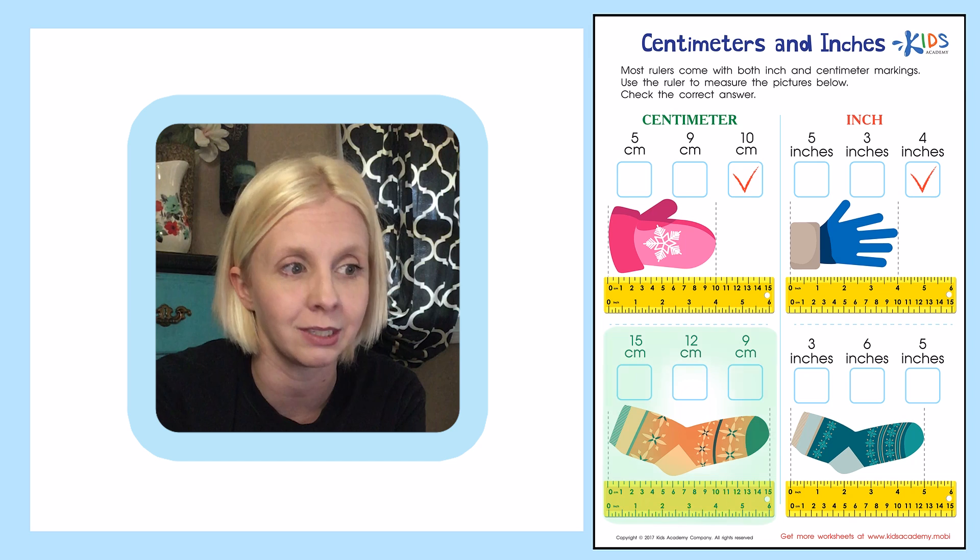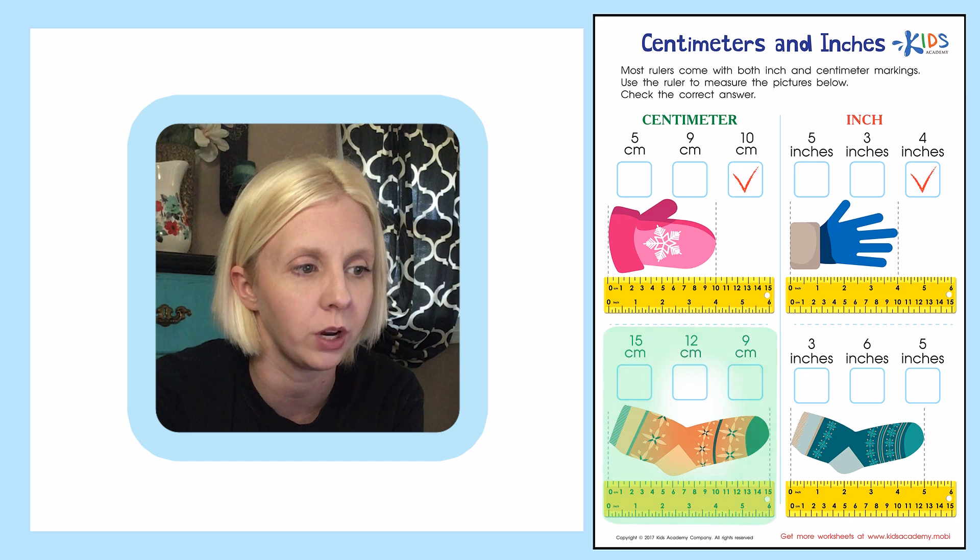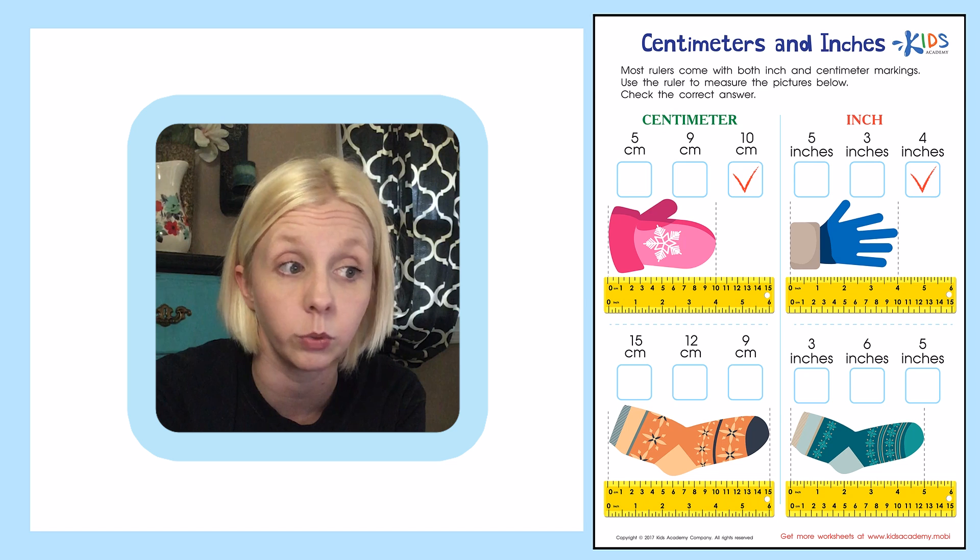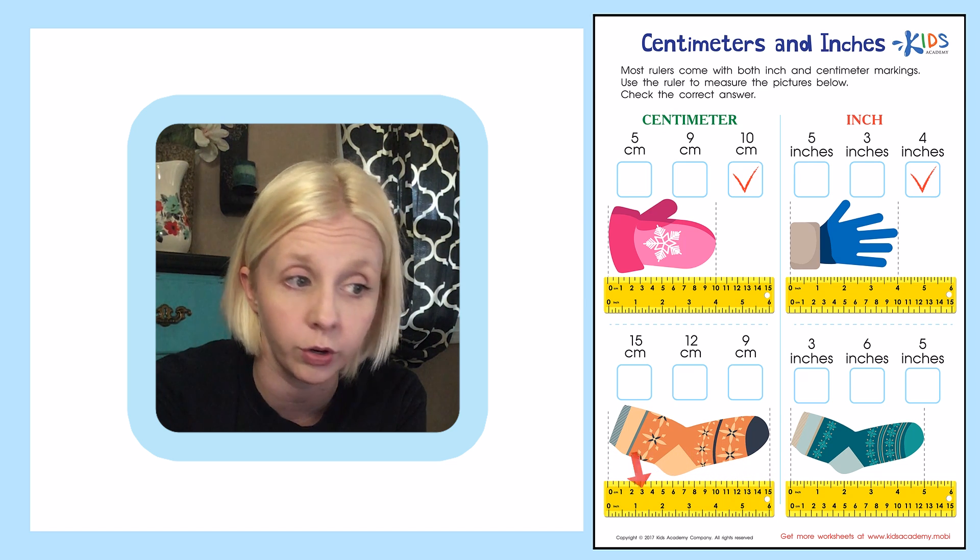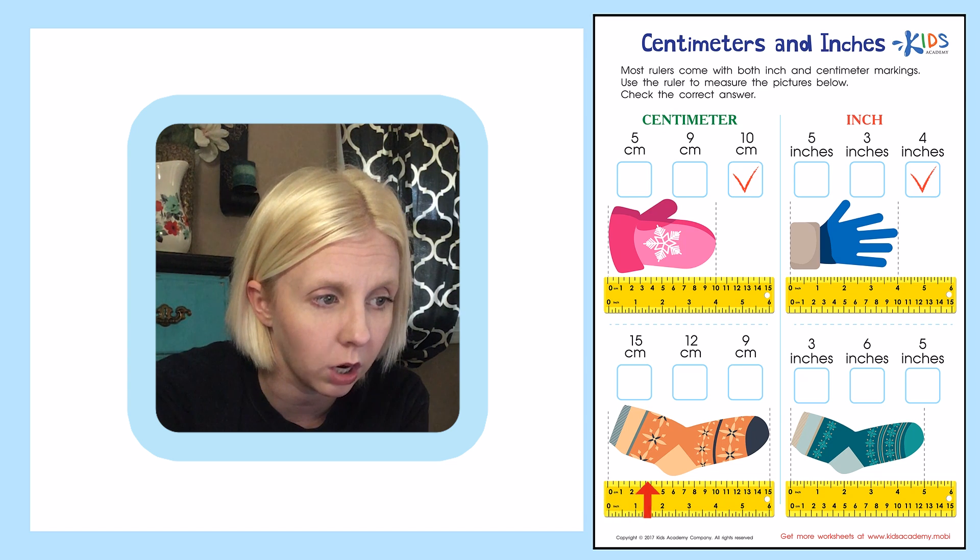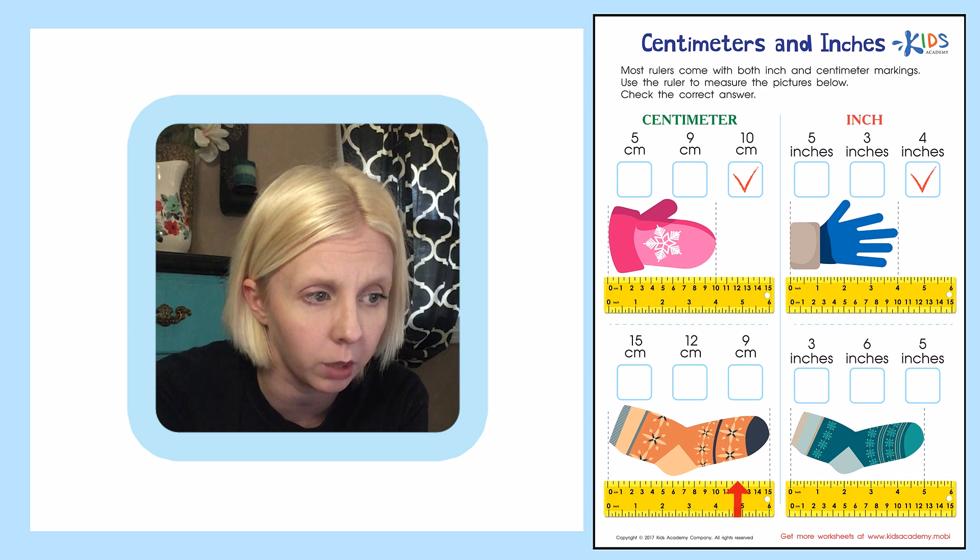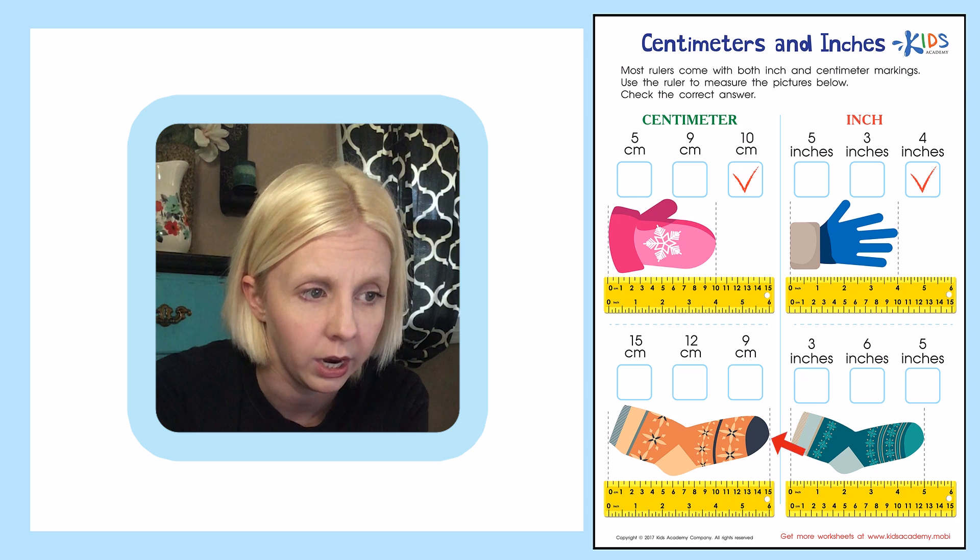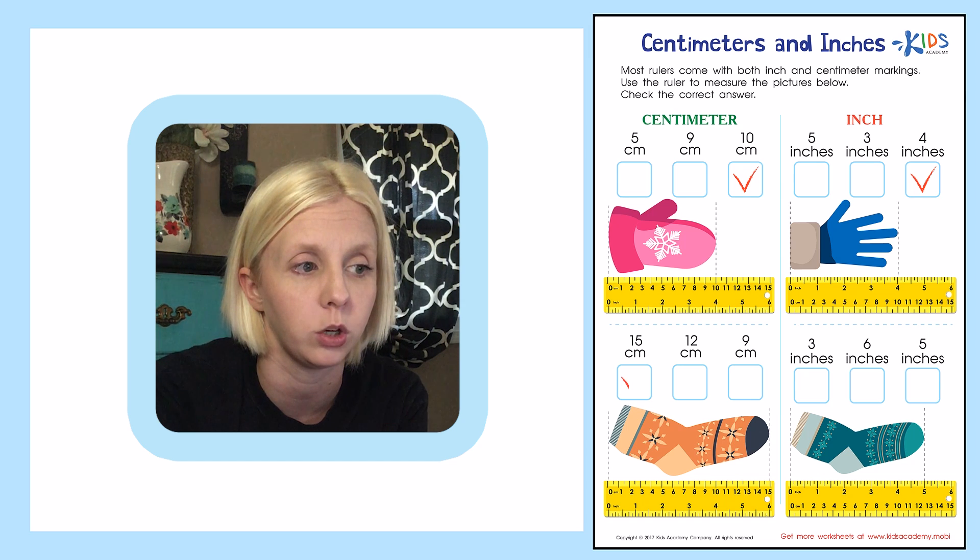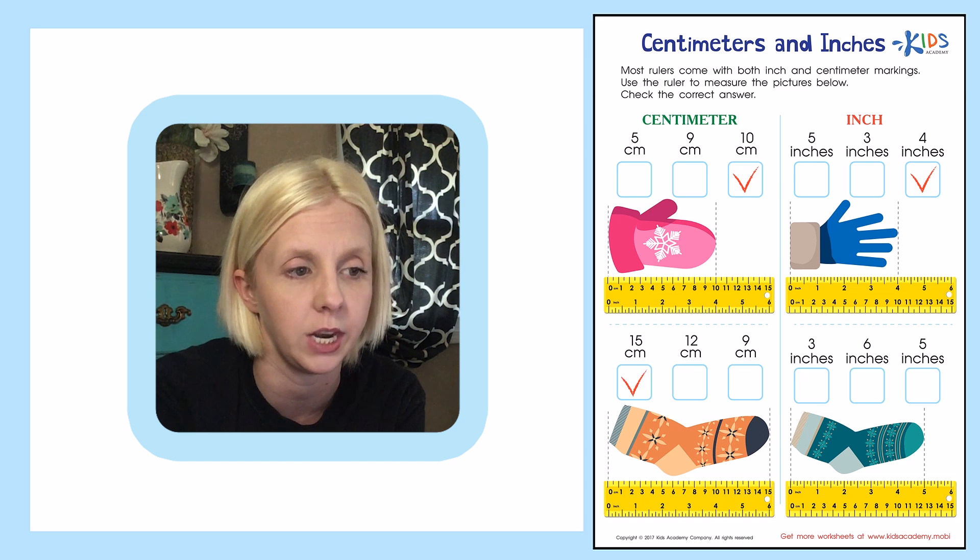The next thing we're measuring is a sock. Look at that sock. We're going to come over here and measure the sock. And this time we are also looking for centimeters. So centimeters are the little numbers right next to the sock for us. We've got our sock lined up at the end of the ruler. We're going to come all the way down and it is lined up right over here. So it is going to be 15 centimeters. I'm going to put a check right there on the 15.